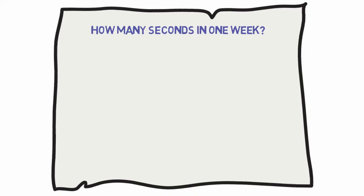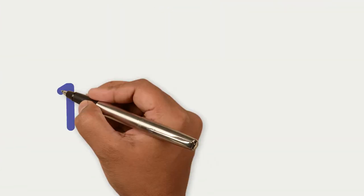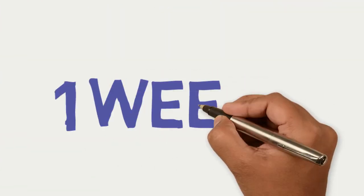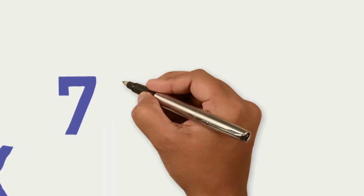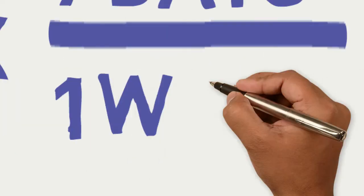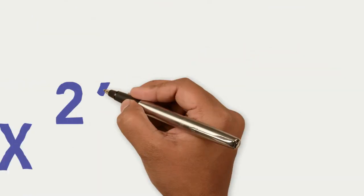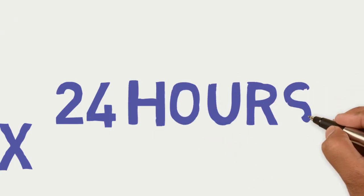For example, we can easily determine the number of seconds in a week using unit analysis. Start with the known quantity — one week — then multiply by known conversion factors, writing them as fractions multiplied together. Even if you think it is unnecessary, problems will grow in complexity and it is easy to mix up a conversion.